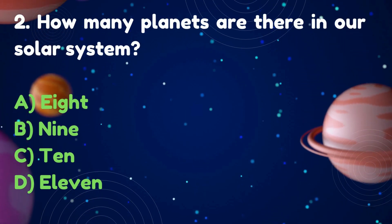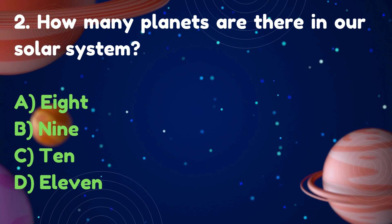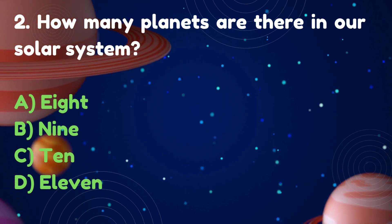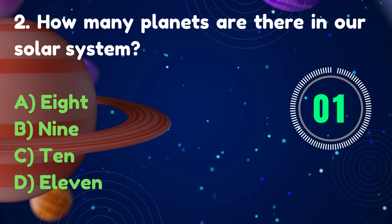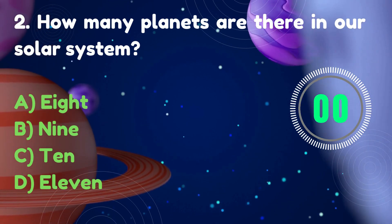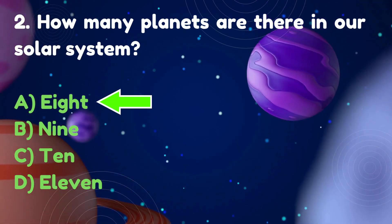How many planets are there in our solar system? Options: 8, 9, 10, 11. Answer: 8.